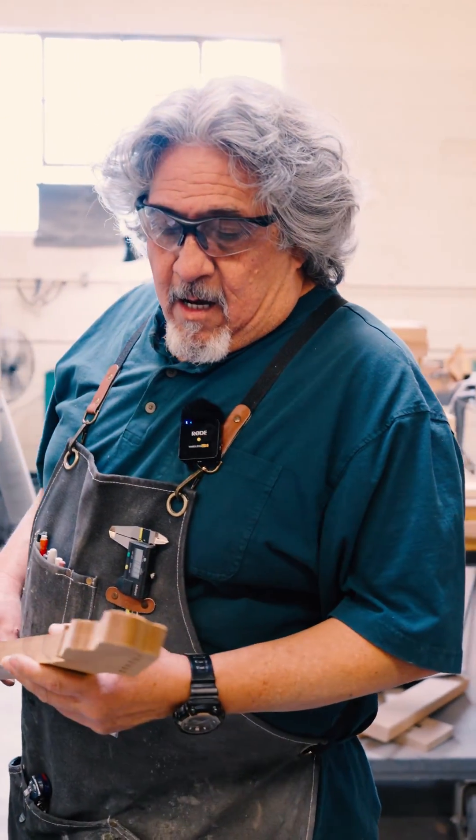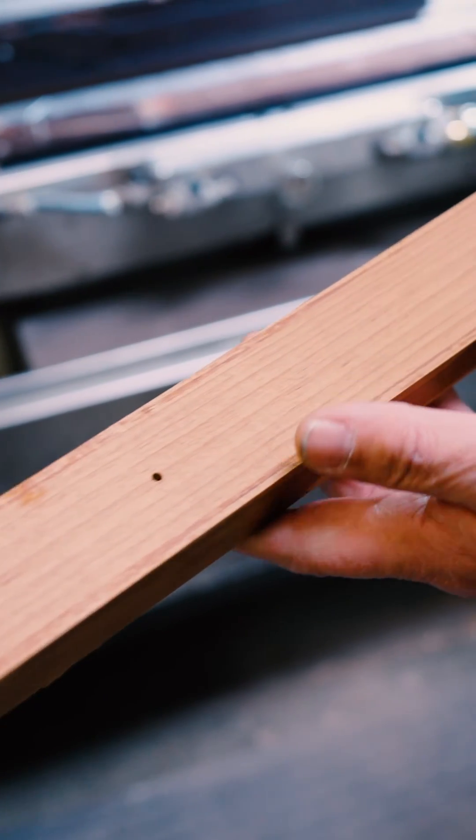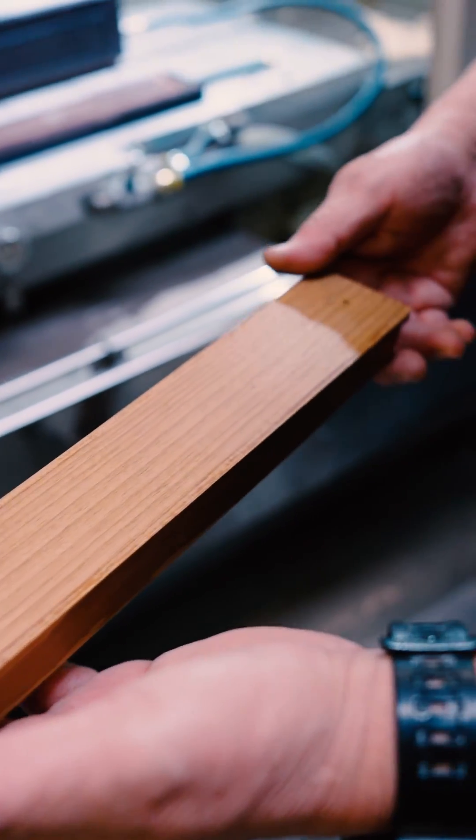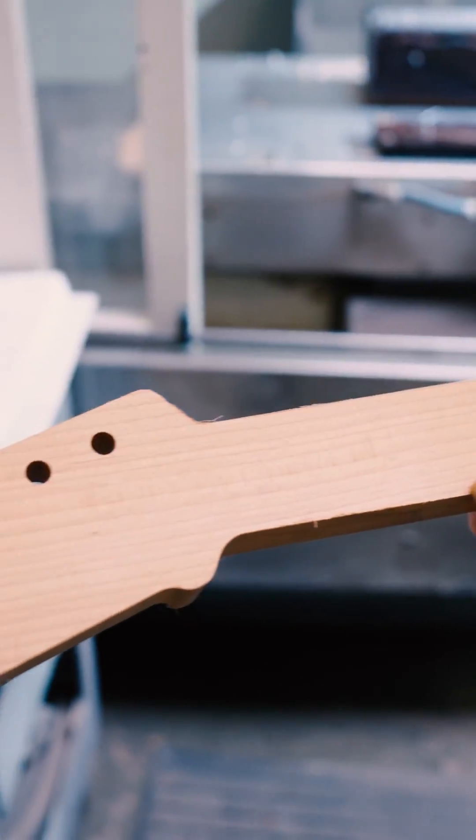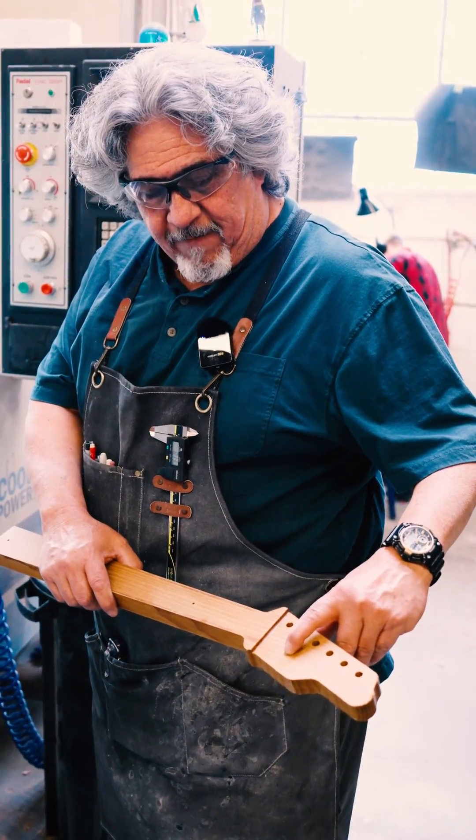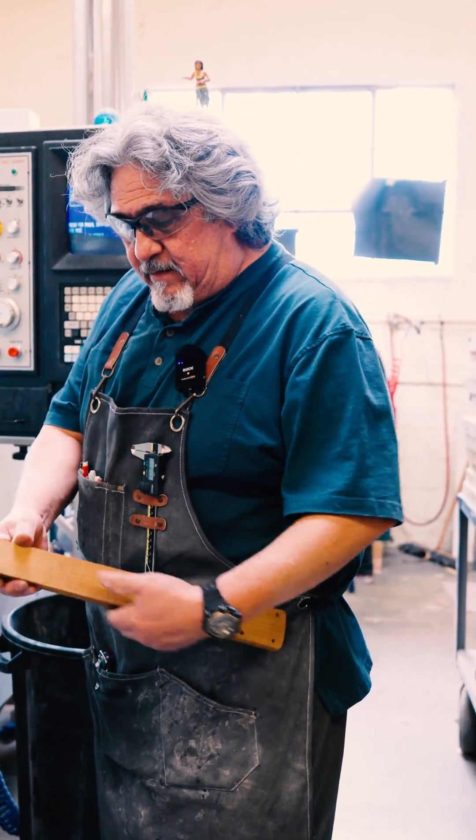Today we are what we call scooping the headstock, putting a radius on the fretboard, and we're going to back shape this neck. This is a roasted neck, maple on maple. We write ourselves notes - it's going to be an SC, one and five eighths nut width, with a standard one and five eighths back shape.